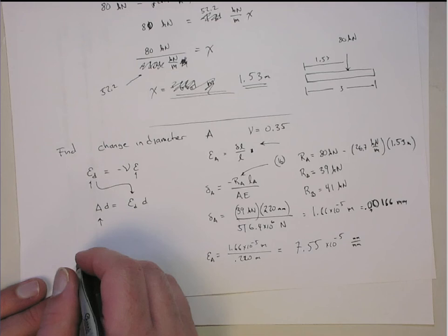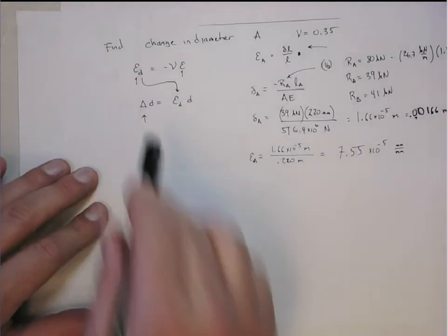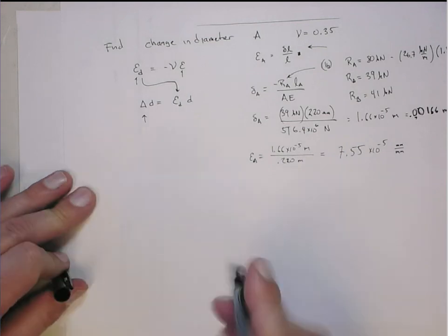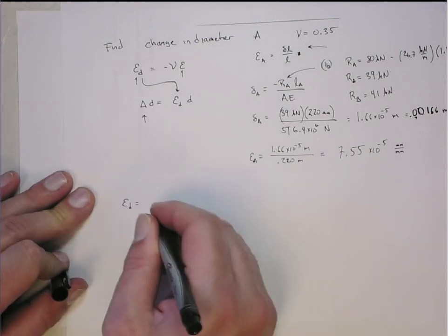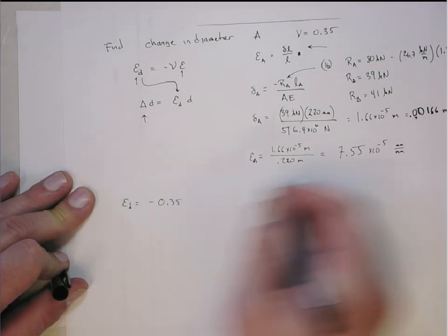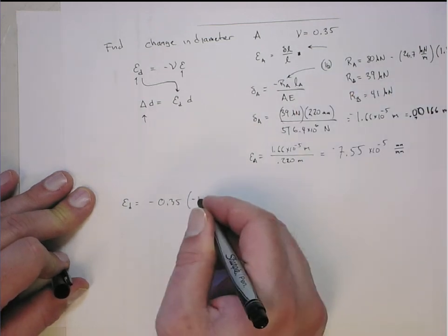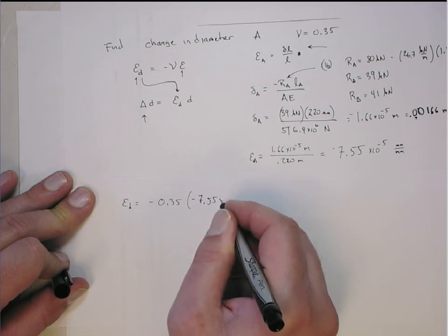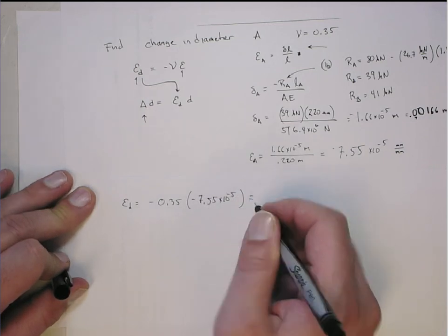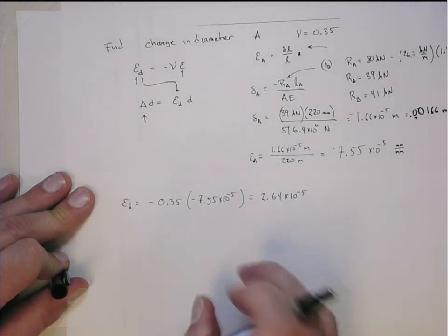Now we know that, I can get the diametric strain from the Poisson ratio relationship. So the diametric strain is minus 0.35. And actually, I lost the minus sign here, so this should be a minus, because it's in compression. So that's minus 7.55 times 10 to the minus 5th, and that gives me 2.64 times 10 to the minus 5th. This is positive, so the diameter is getting bigger.